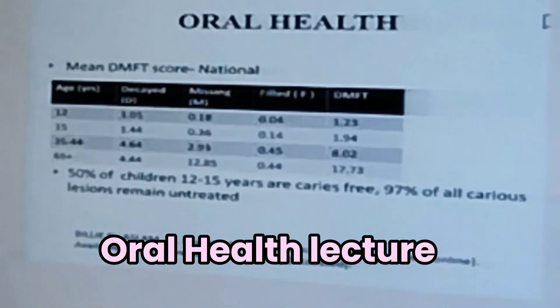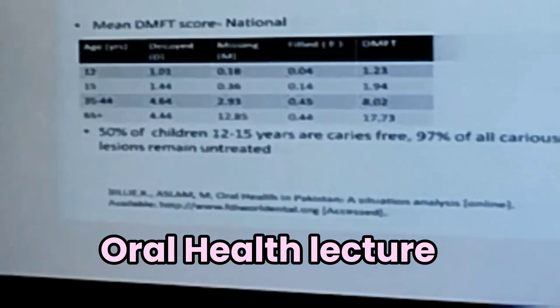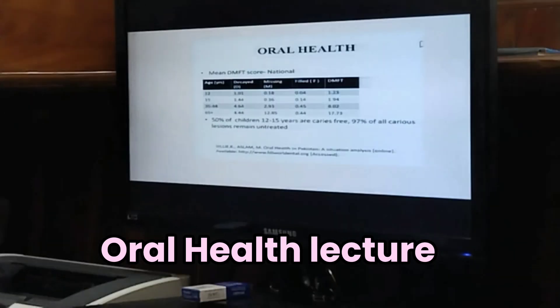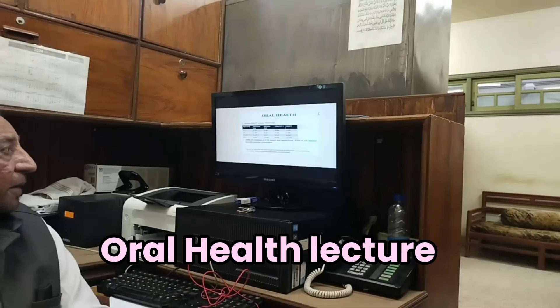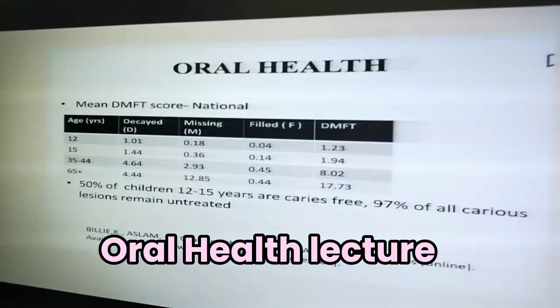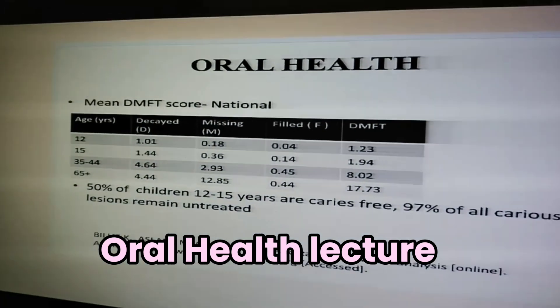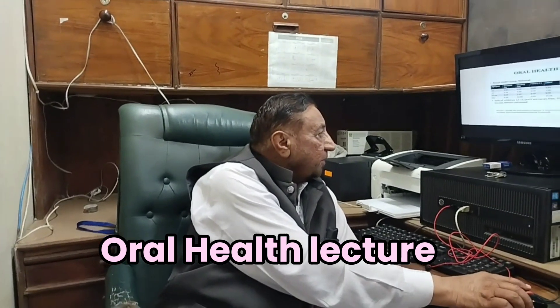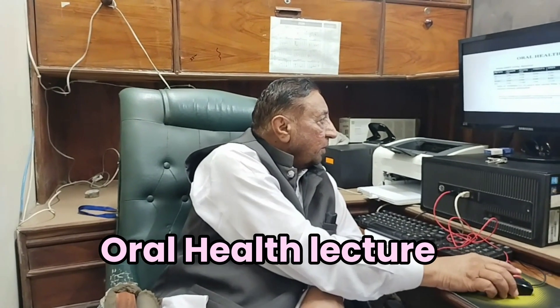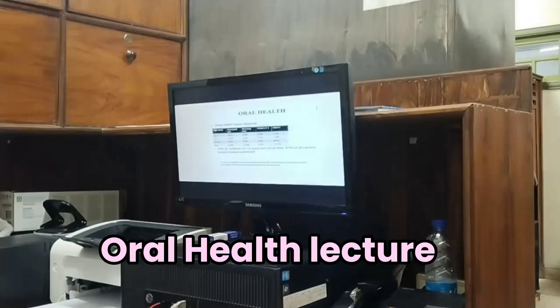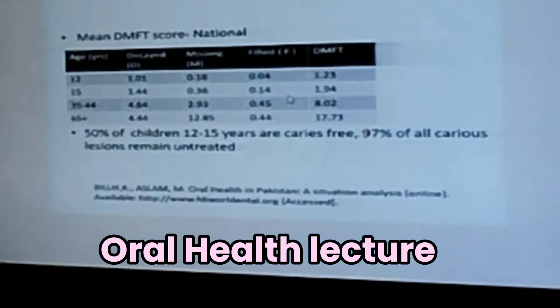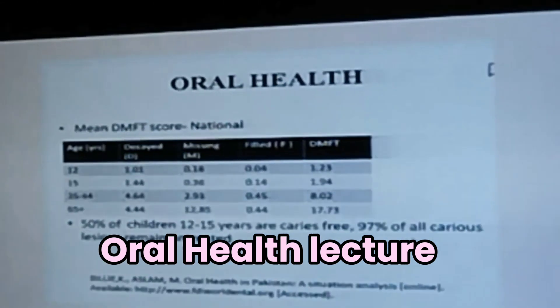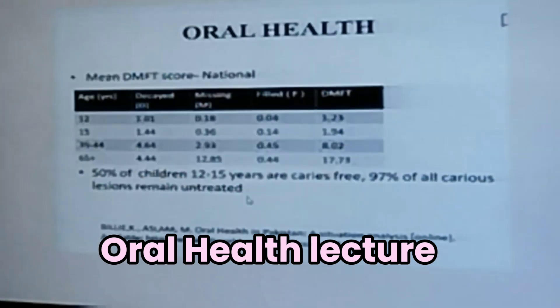We use the indicator DMFT — Decayed, Missing, and Filled Teeth. Pakistan data shows that DMFT increases with age, from 1.23 up to 17.4 by age 65. Additionally, 50% of children have dental caries, and 97% of all caries cases remain untreated.